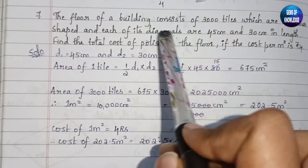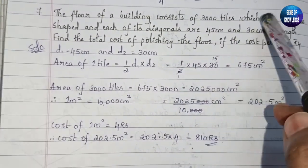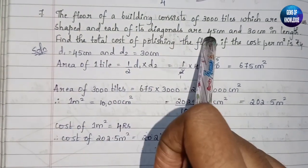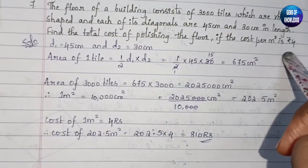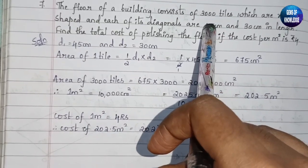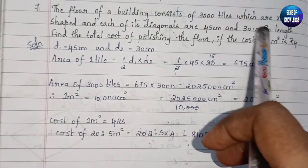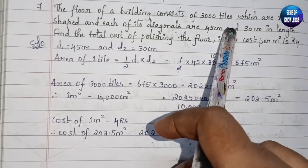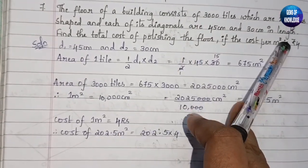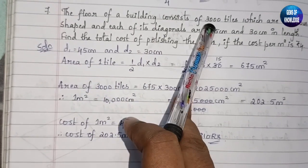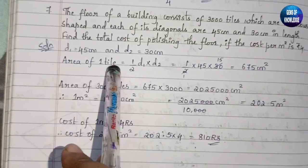Seventh question: the floor of a building consists of 3000 tiles which are rhombus-shaped, and each tile has diagonals of 45 centimeters and 30 centimeters. Find the total cost of polishing the floor if the cost per meter square is rupees 4. We need to find the area of one rhombus tile first, then multiply for 3000 tiles.